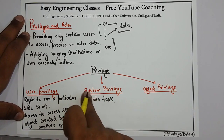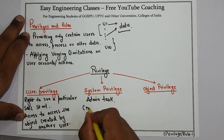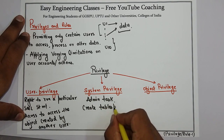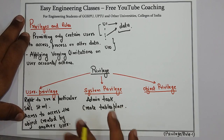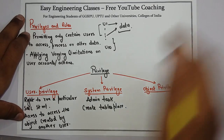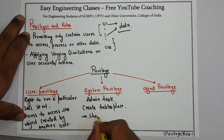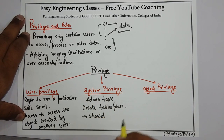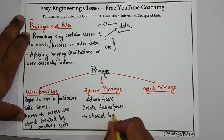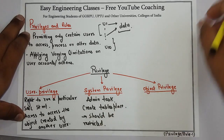The user who gets system privilege can perform admin tasks such as creating tablespaces, creating users, dropping users, and altering users. This privilege should be restricted and only provided to users who are capable of handling database administrative tasks. Not everyone should get access to system privilege.